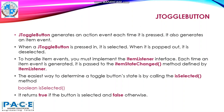The easiest way to determine a toggle button state is by calling the method isSelected. The method isSelected returns true if the button is selected and it returns false otherwise.